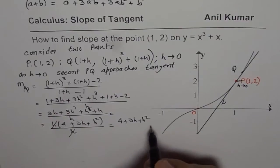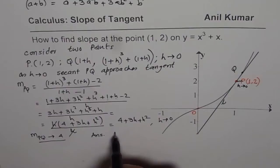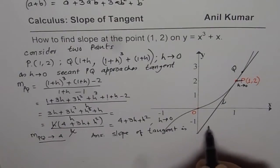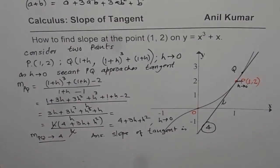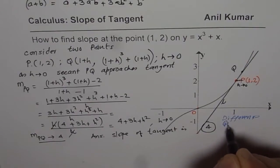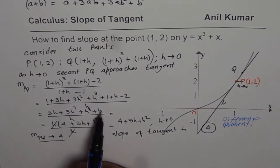Now since h is approaching 0, the slope PQ approaches the value 4. Therefore the slope of the tangent is 4. That is how you find the slope of the tangent line on a curve very easily. This method is called the difference quotient method. I will provide some more links so you can practice and get hold of this method.